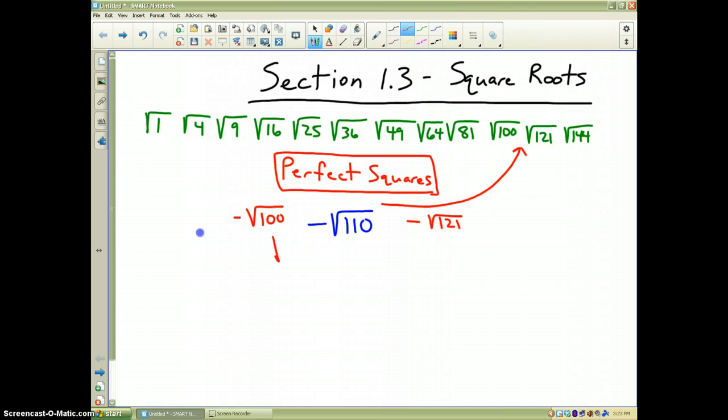We all know that the square root of 100 is 10, and the negative sign makes it negative 10, and negative square root of 121 is negative 11. Therefore, our answer must lie somewhere between those two numbers.